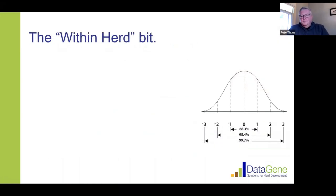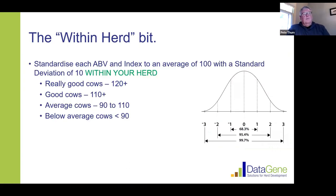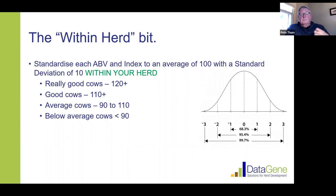Now the within-herd bit. I want you to think about your Production Index, or PI. Your PI is the way of measuring the relative performance of animals within your herd for production, and like the Within Herd Ranking Tool, it ignores breed. If you've got a PI of 100 for production, that's your average cow — she could be black and white, she could be Jersey, she could be Red. Cows with really good PIs are around 130, and cows with bad PIs are down in the 80s.